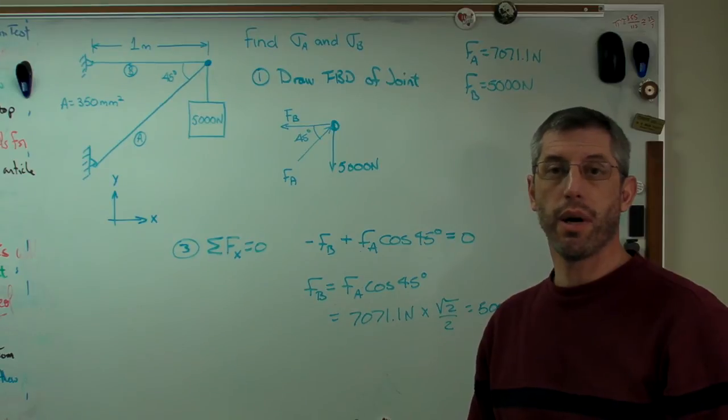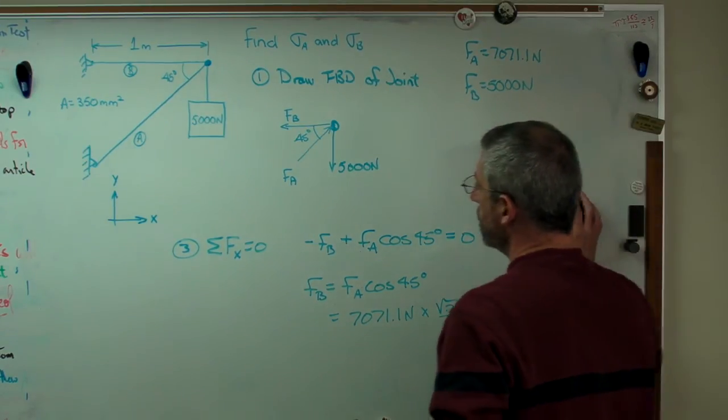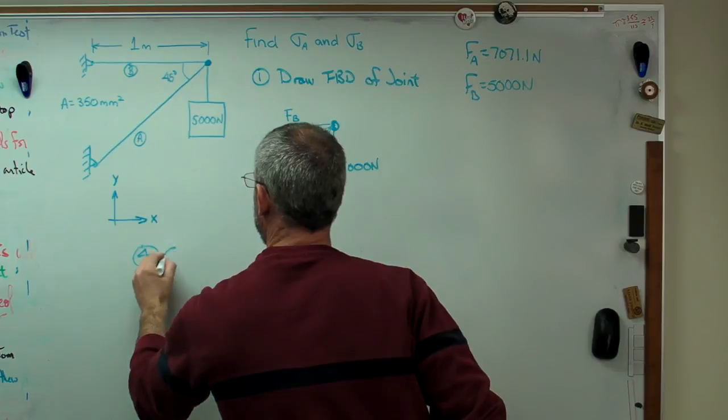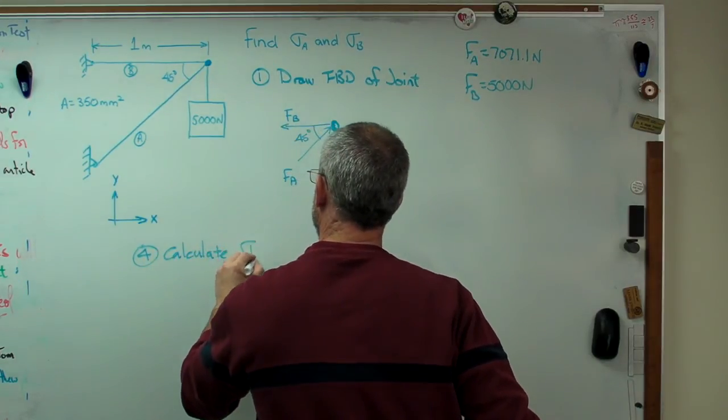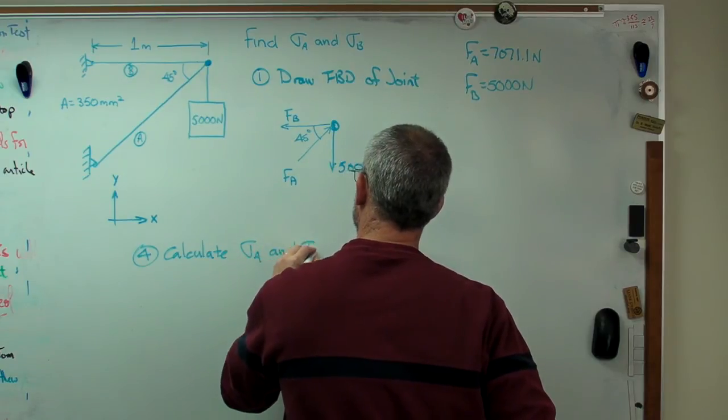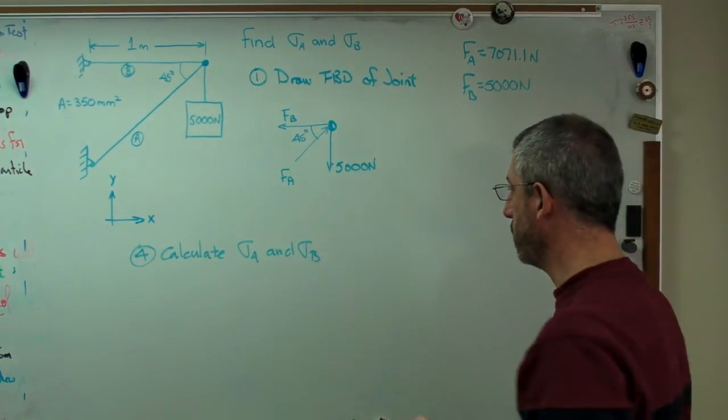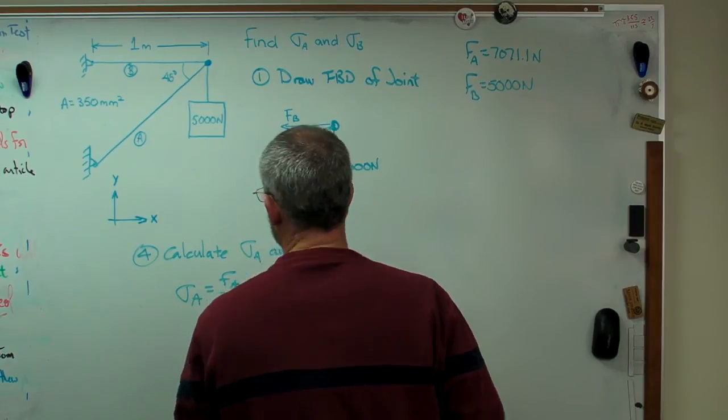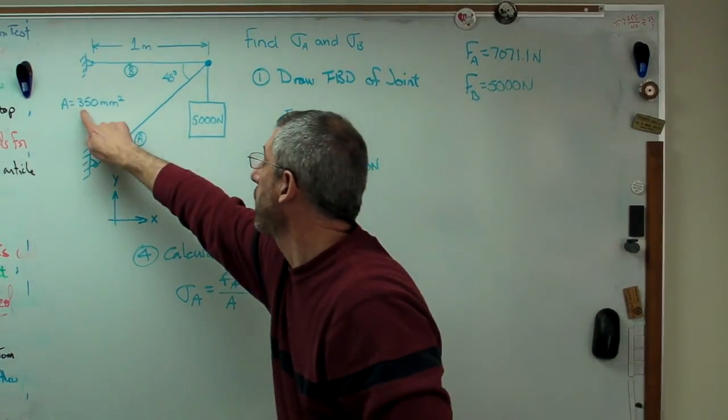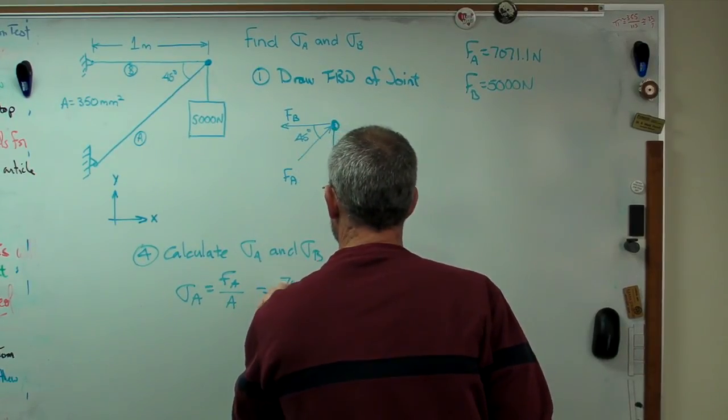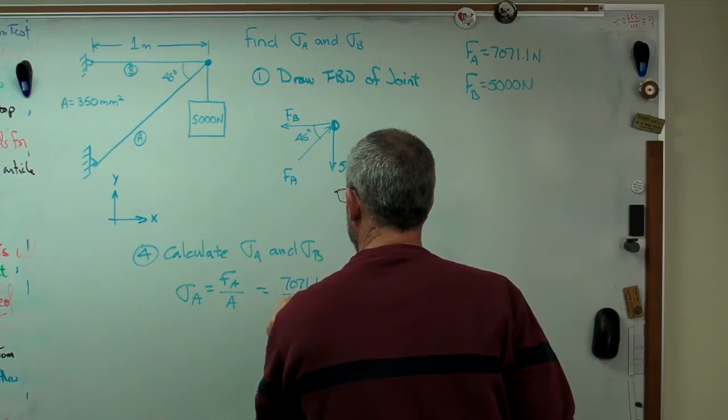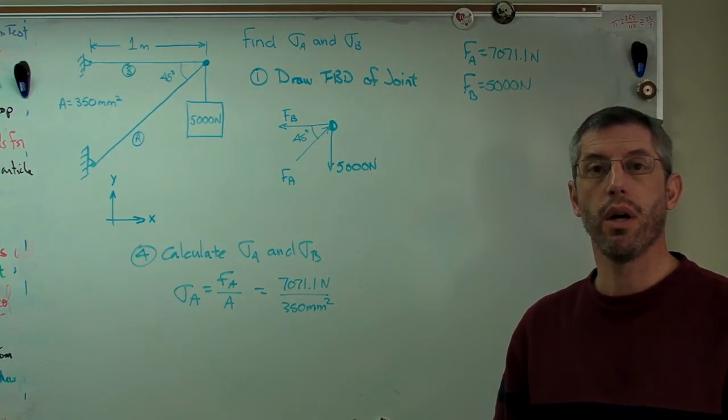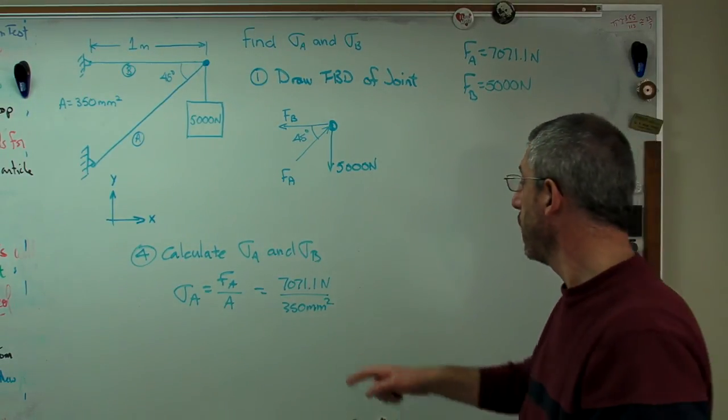Okay, there we go. We've got forces. All we have to do now is divide by areas to get stresses. So again, I'm going to erase this. So step four, the last one. Calculate sigma A and sigma B. Now this is pretty simple. Okay, that big A is the area. I've got that listed right there. And that's going to be 7071.1 newtons divided by 350 millimeters squared.